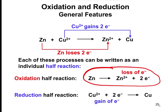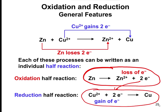Those electrons don't stay out there — they are transferred into the reduction half reaction. Reduction is gaining, so Cu²⁺ gains two electrons to form regular copper, Cu. You can look at the whole entire reaction, and you can also break that down and look at the half reactions, which simplifies things a bit.